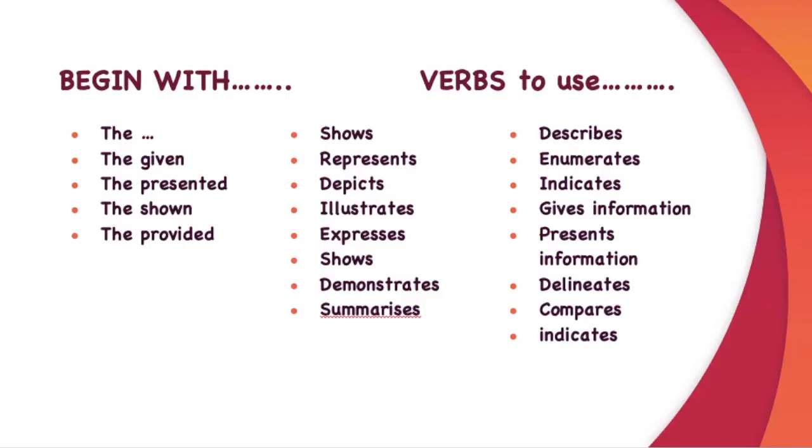Now let's take a look at the important vocabulary for writing task one, academic writing. How you start off with your answer is you begin with the pie chart, the histogram, the bar diagram, the line diagram and so on, the map or the given map, the presented map, the shown map, the provided map. This is the way you start. Then you include what are you actually talking about. So the given bar chart shows or represents, depicts, illustrates, expresses, demonstrates, summarizes. There can be a Z instead of S and both spellings will be counted correctly. Describes, enumerates, indicates, gives information, presents information, delineates, compares, indicates. These are the verbs that you can use to start off.